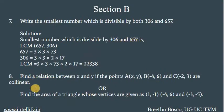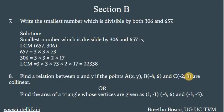Now question number 8 has two questions — you can answer either the first one or the second one. The first question is: find a relation between X and Y if the points A(X, Y), B(−4, 6) and C(−2, 3) are collinear.